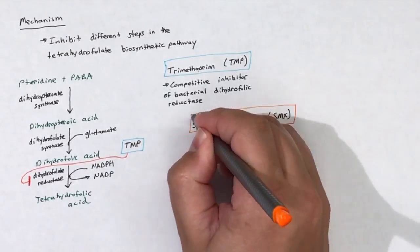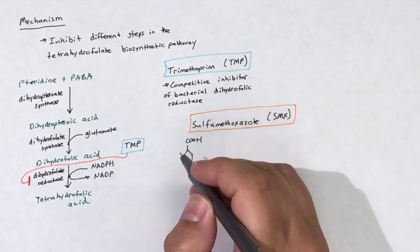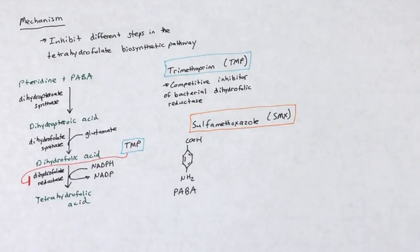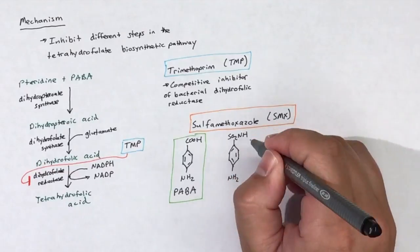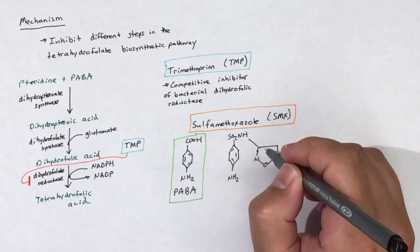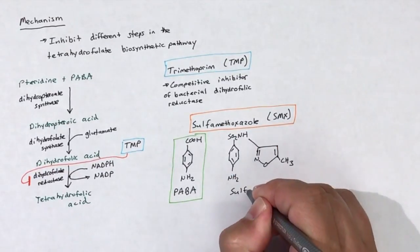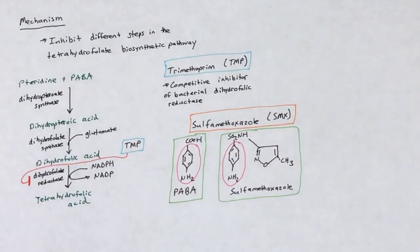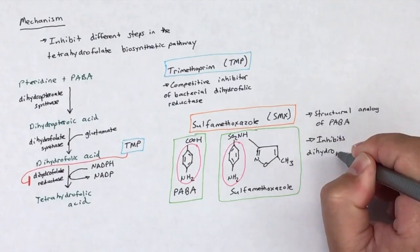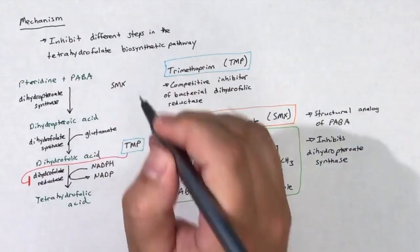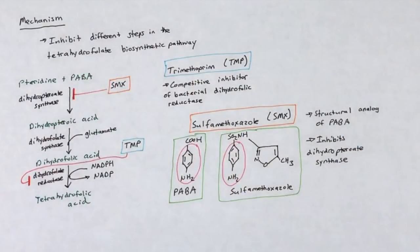Sulfamethoxazole is a structural analog of PABA and acts as a competitive non-functional mimic of PABA to inhibit dihydroteroate synthase. When sulfamethoxazole binds dihydroteroate synthase, the enzyme is unable to bind PABA, which prevents dihydroteroate synthase from synthesizing dihydrofolic acid from PABA. When sulfamethoxazole is given as a monotherapy, it acts as a bacteriostatic antibiotic.